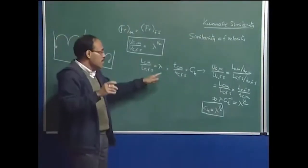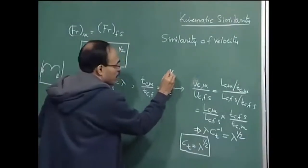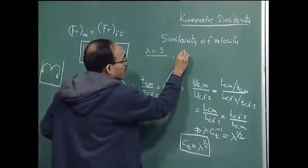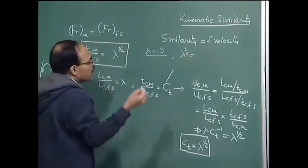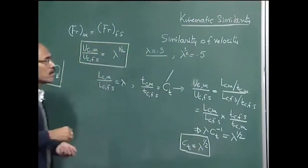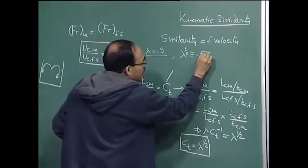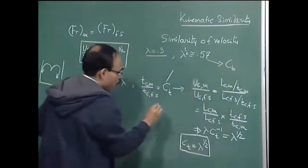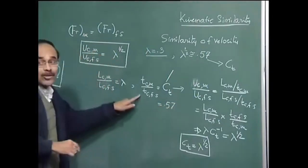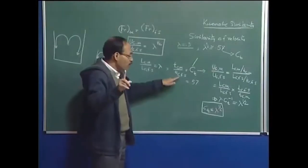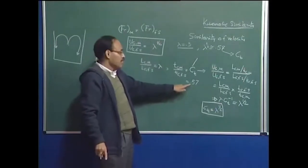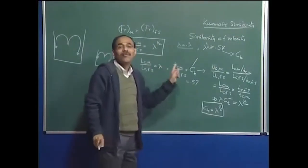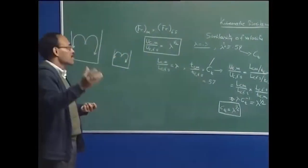So if λ = 0.3, then λ^(1/2) ≈ 0.55 to 0.57. Therefore if you are talking about 1 second in the full-scale system, that corresponds to approximately 0.57 seconds in the model. If you are talking about 10 seconds in the full-scale system, that corresponds to 5.7 seconds in the model. This gives us the correspondence between time scales in the two systems.